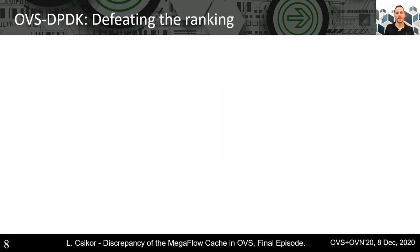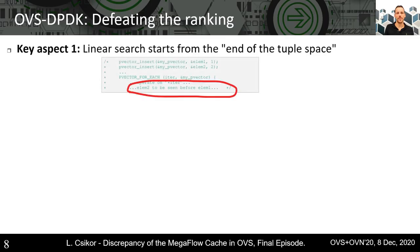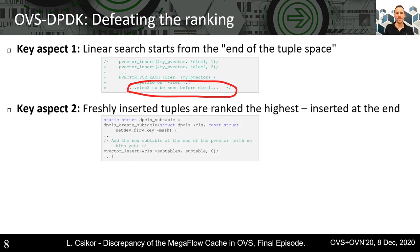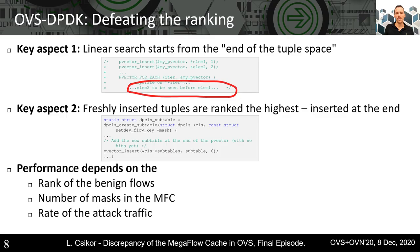In order to defeat the ranking, there are two key aspects to keep in mind. First, the linear search process itself starts from the end of the tuple space — this is also highlighted in the source code comments. Second, a tuple when inserted is appended to the end of the tuple space, meaning it will be ranked highest as the linear search process starts the lookup at this tuple. So the overall performance of OVS DPDK depends on the ranks, the number of masks, and the attack rate.